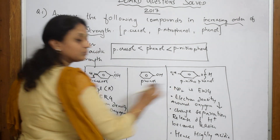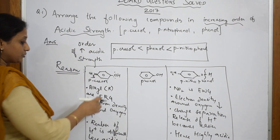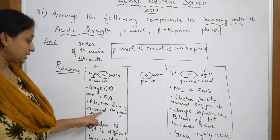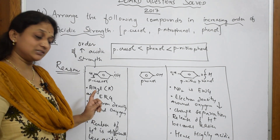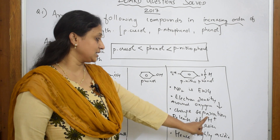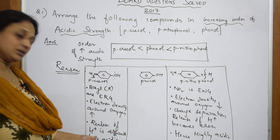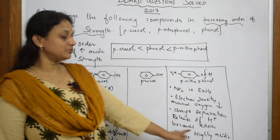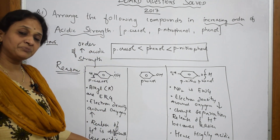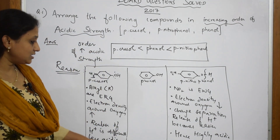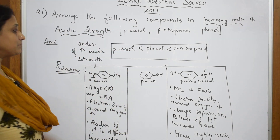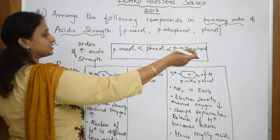To summarize the comparison: for paracresol I spoke about the alkyl group being electron-releasing, electron density around oxygen increases, and release of H+ is difficult. For paranitrophenol I spoke about the nitro group being electron-withdrawing, electron density decreases, charge separation occurs, release of H+ is easy, hence highly acidic.